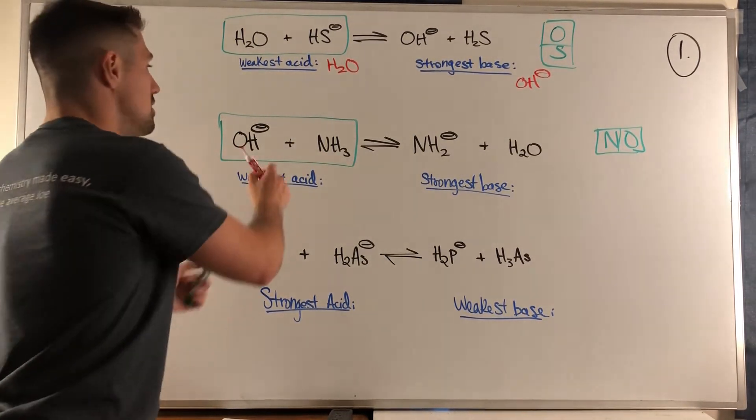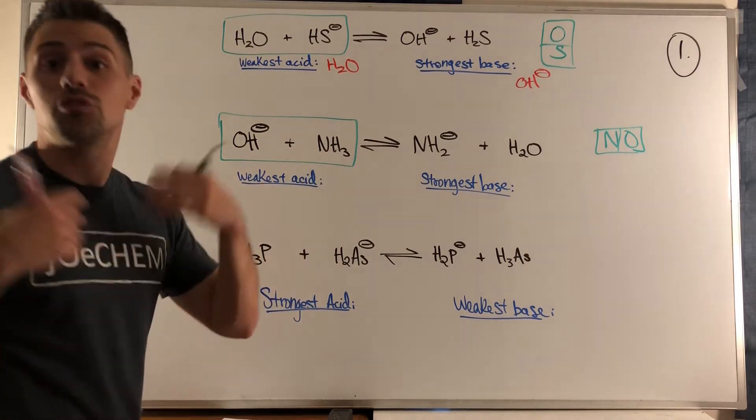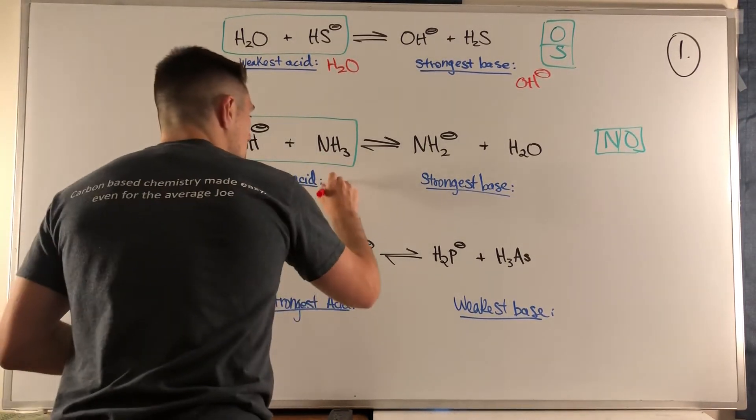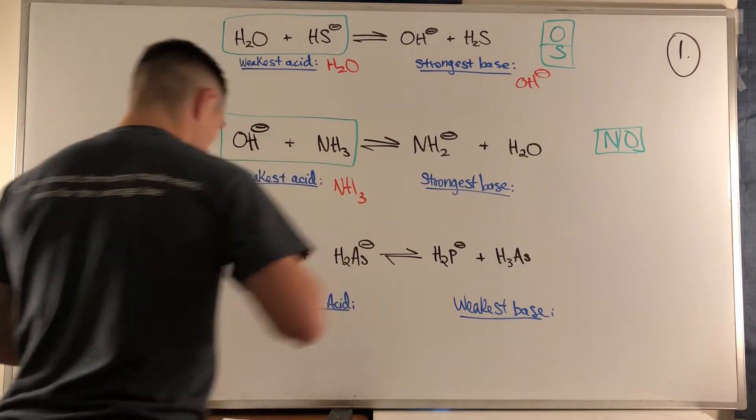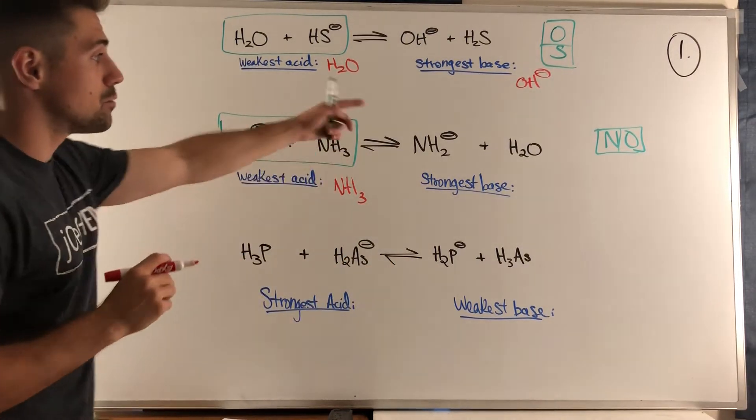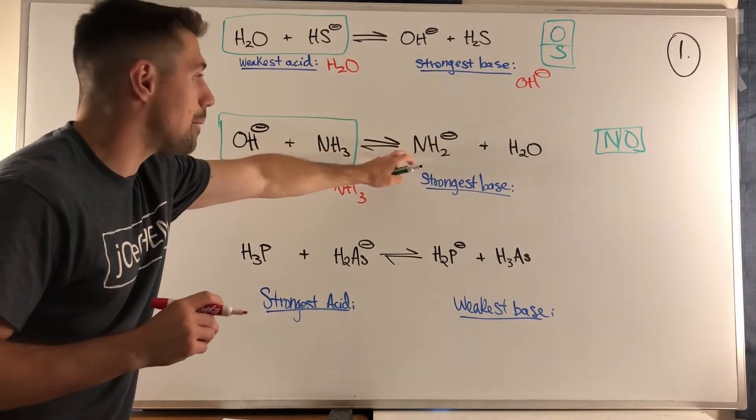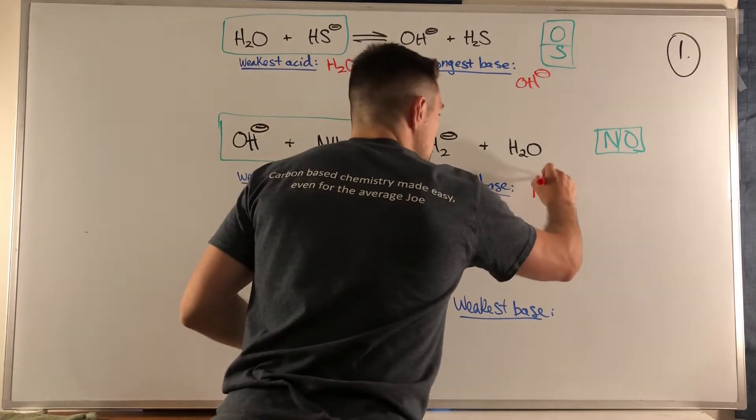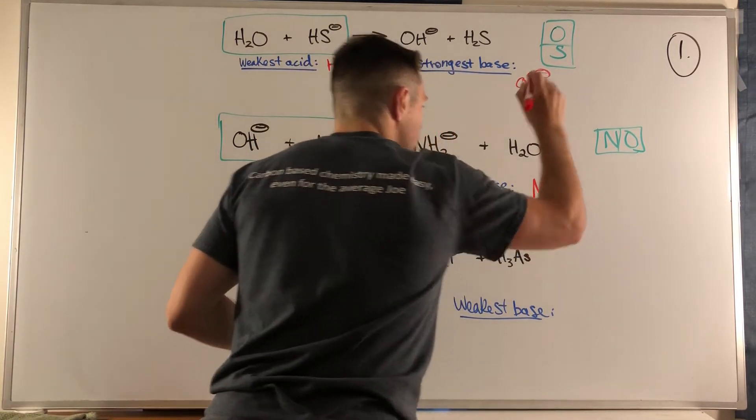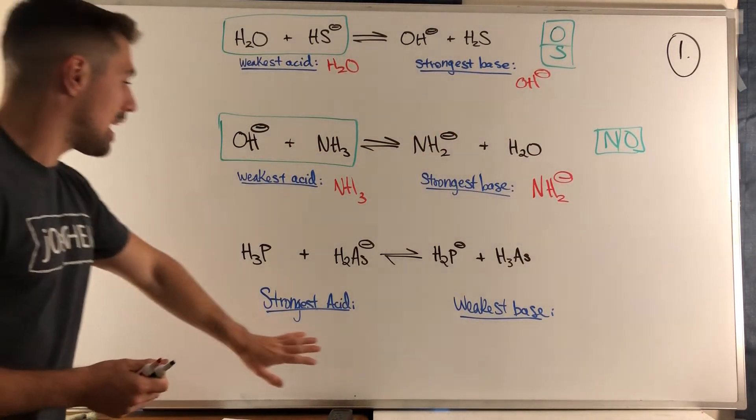If we were going to identify the weakest acid, well the weakest acid is on this side and it's the side that actually has H plus to donate, so it's ammonia, the NH3. Now the strongest base - well, this is our strong side and this happens to be the base, the negative charge, the side looking to pick up H plus.